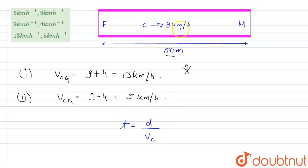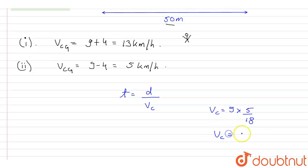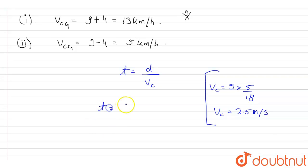The distance is 50 meters and the velocity of the child is 9 km/h. To convert to SI units — meters per second — we multiply by 5/18, so velocity of the child equals 2.5 m/s. Therefore, time equals 50 divided by 2.5, which equals 20 seconds.